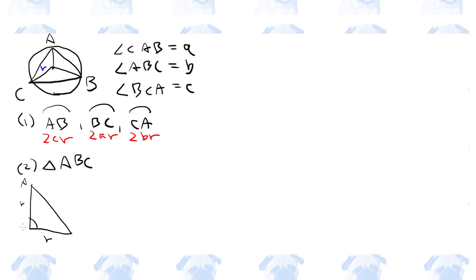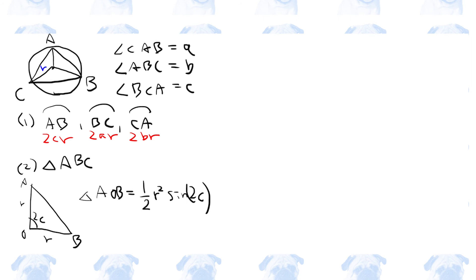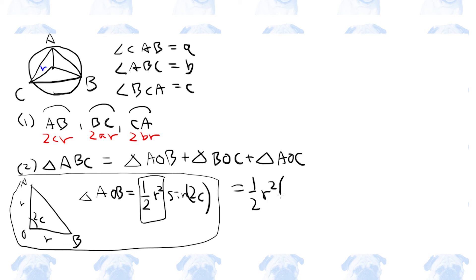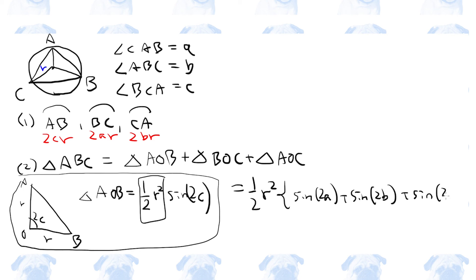Let this triangle be called aob, with the angle between them being 2c based on this triangle here. The area of triangle aob is 1 over 2 times r squared times sine 2c. Because triangle abc is the sum of the three triangles aob plus boc plus aoc, the area is 1 over 2 r squared times the quantity sine 2a plus sine 2b plus sine 2c.